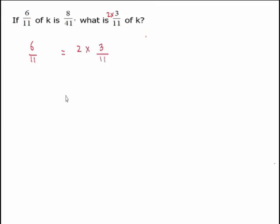And therefore we can say that 6 over 11 is equal to 2 times 3 over 11. Or in other words, 3 over 11 is equal to 1 half of 6 over 11. We need to find out what is 3 over 11 of k. So 3 over 11 of k is going to be 1 half of 6 over 11 of k.